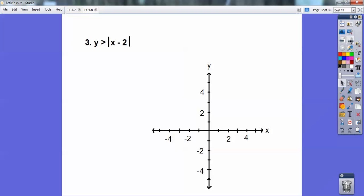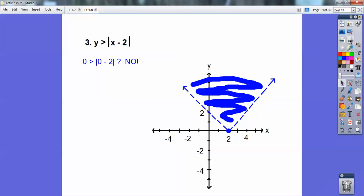And then we're going to test 0, 0. So test 0, 0. And that was a no this time. So I shade, since 0, 0 is on the outside, I shade the inside of the V.